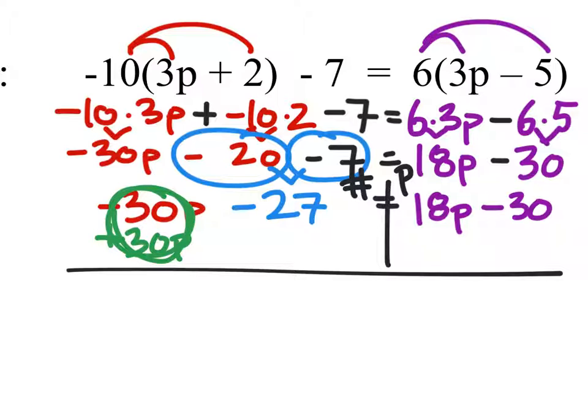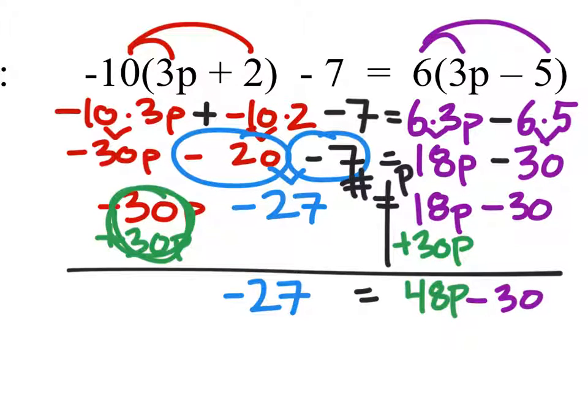But if I do it to one side of the line I must also do it to the other side of the line. So I have 18p plus 30p that gives me a 48p. Now what we'll do is we have that minus 30 and it is also on the wrong side of the equal sign because the p's should be on the right. So we've got to get rid of that one as well by adding 30 to both sides like this.